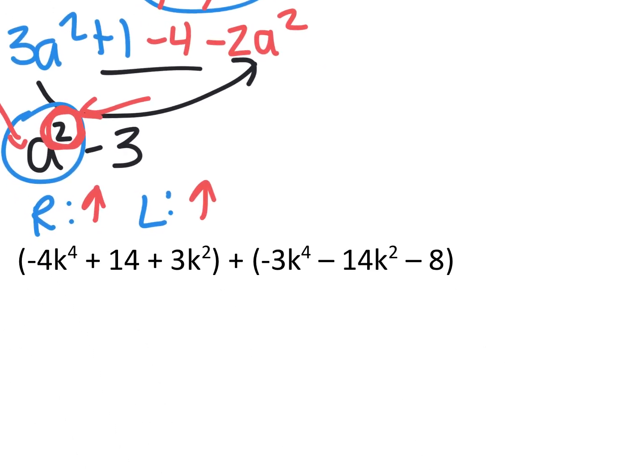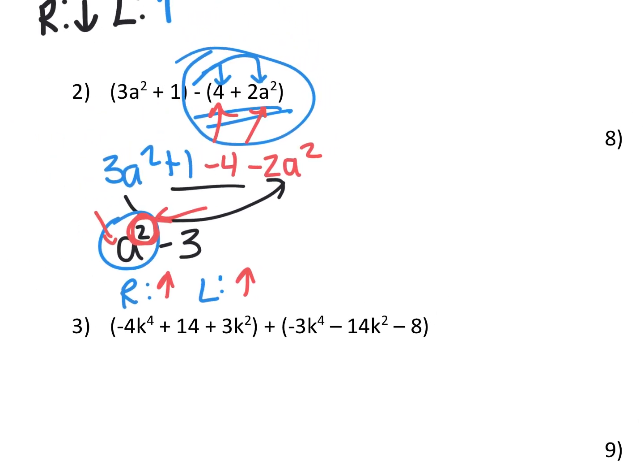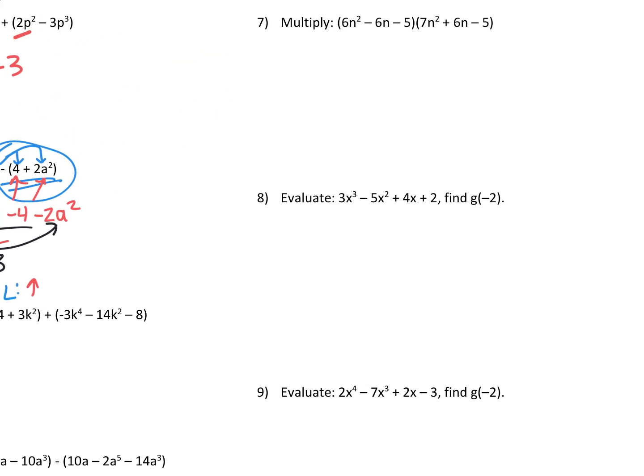All right. So the rest of the worksheet, you do it the exact same way. Just circle the lead term when you're done. And always put the lead term in front, by the way. Otherwise, I have to nick you on the grading. If you don't have the lead term in front, that's considered not in standard form. So combine all your like terms, but put the biggest degree in the front. All right, so that's your worksheet.